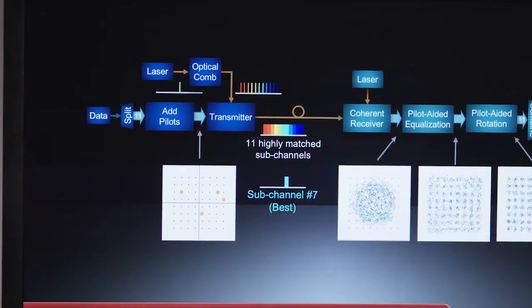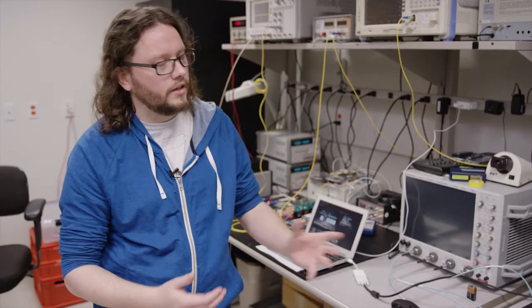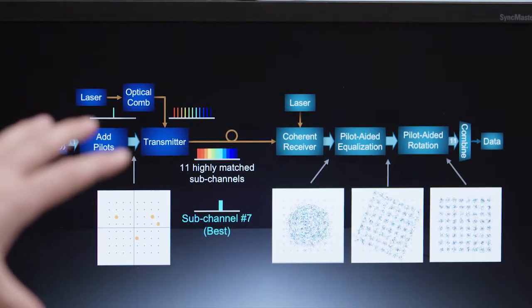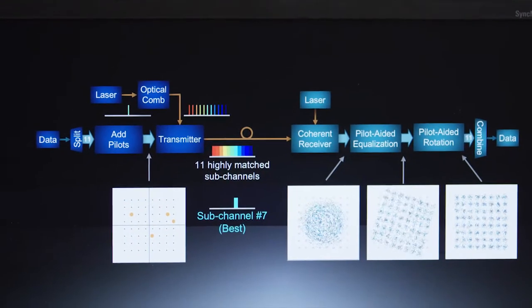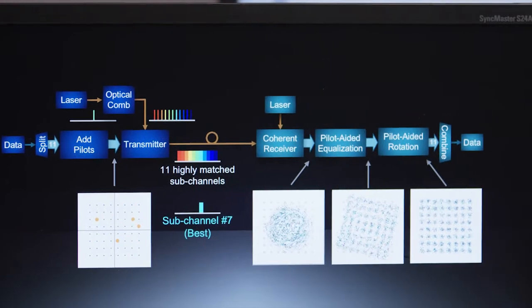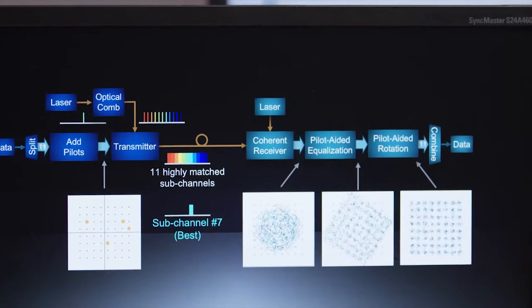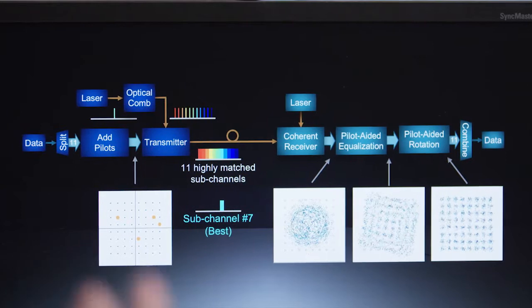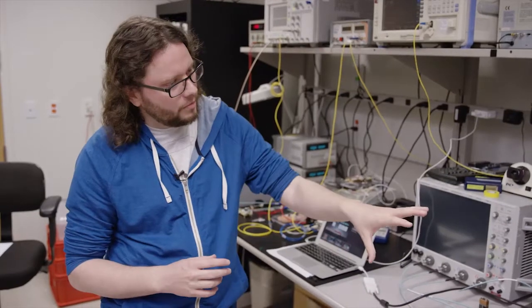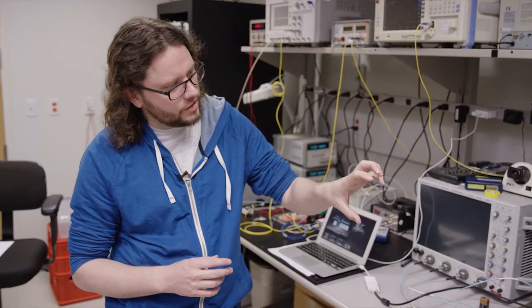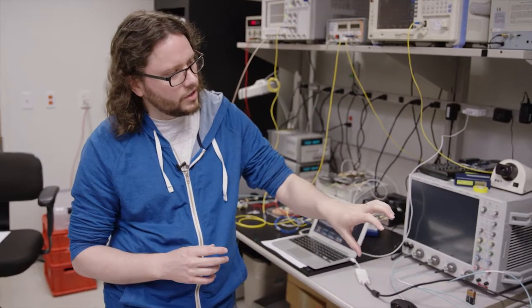So then we transmit the signal over a single fiber to the receiver. Now the receiver, as I mentioned earlier, has much more bandwidth than the transmitter because the technology in this area is much more advanced than the transmitter technology. So we can use only a single laser at the receiver, and we mix this laser with the received signal, and then we convert everything into the electrical domain and then digitize it using an analog to digital converter. And what we see here is just a single of the sub-channels, so this is the best example of the signal.